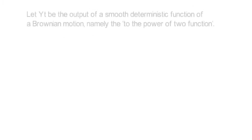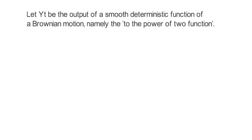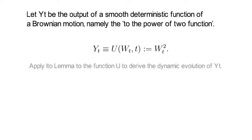Let Yt be the output of a smooth deterministic function of a Brownian motion, namely the power-of-2 function. That means that Yt equals Wt squared. Now apply Ito Lemma to the function U to derive the dynamic of Yt.